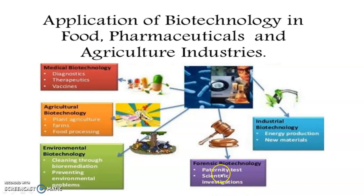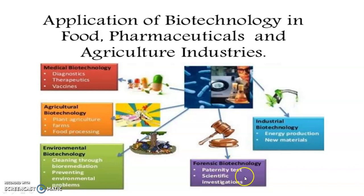Then we have paternity tests and forensic studies — forensic biotechnology. Paternity tests involve finding out the father in cases where the child's father is unknown. Through DNA fingerprinting, such cases can be solved. Scientific investigations from a crime spot — if tissues are obtained — can also be resolved through DNA fingerprinting, which is all part of biotechnology. We can identify the culprit. Now we will take up agricultural biotechnology in detail.